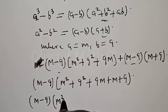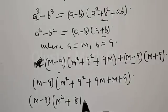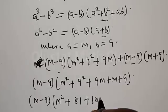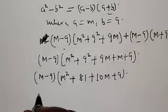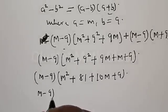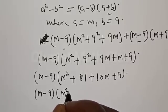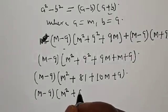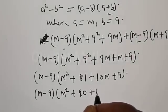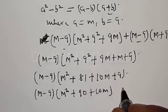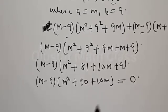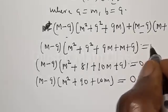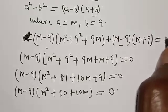We have (m minus 9) multiplied by (m² + 9² + 9m + m + 9), which simplifies to (m minus 9) multiplied by (m² + 81 + 10m + 9), giving (m minus 9) multiplied by (m² + 10m + 90) equals zero. Therefore either (m minus 9) equals zero or (m² + 10m + 90) equals zero.